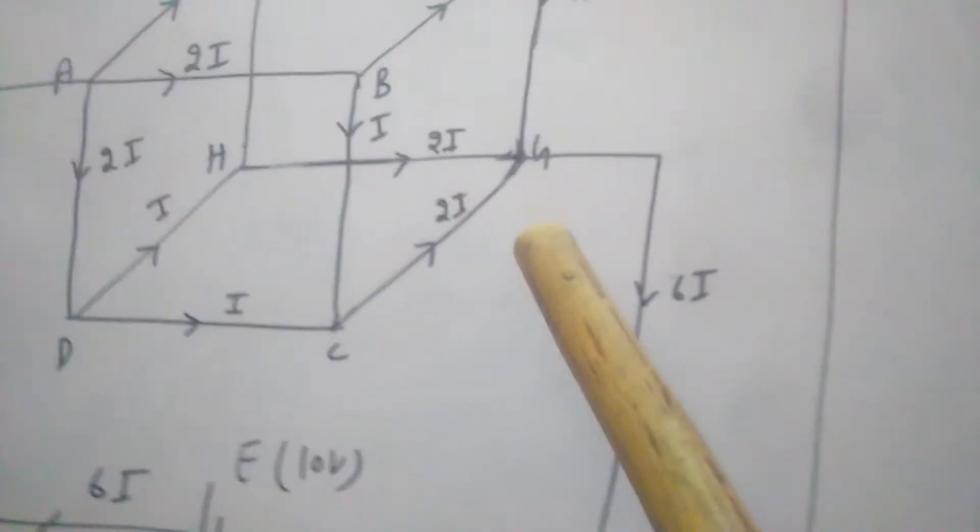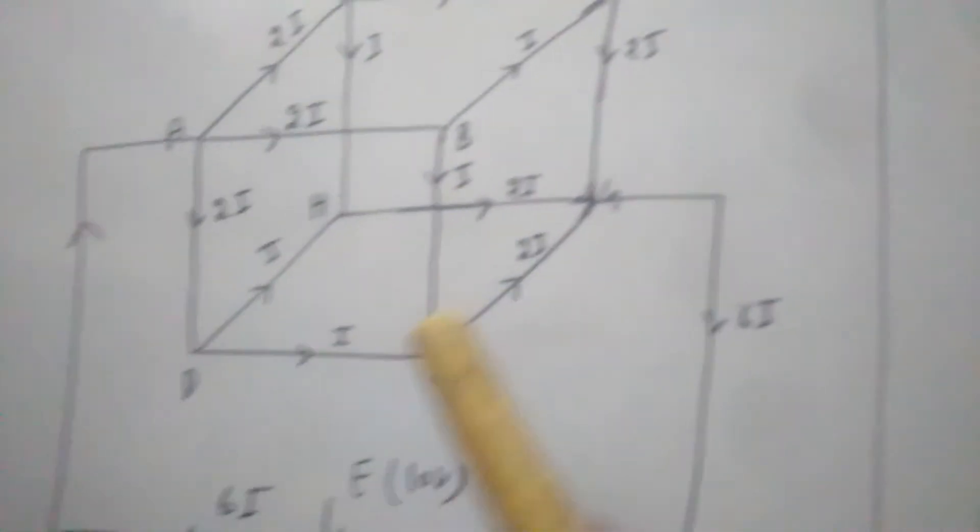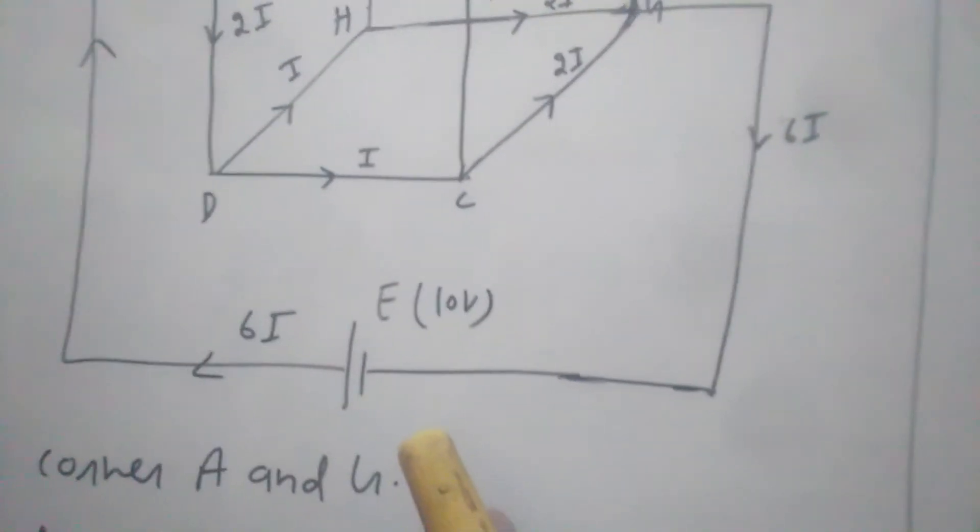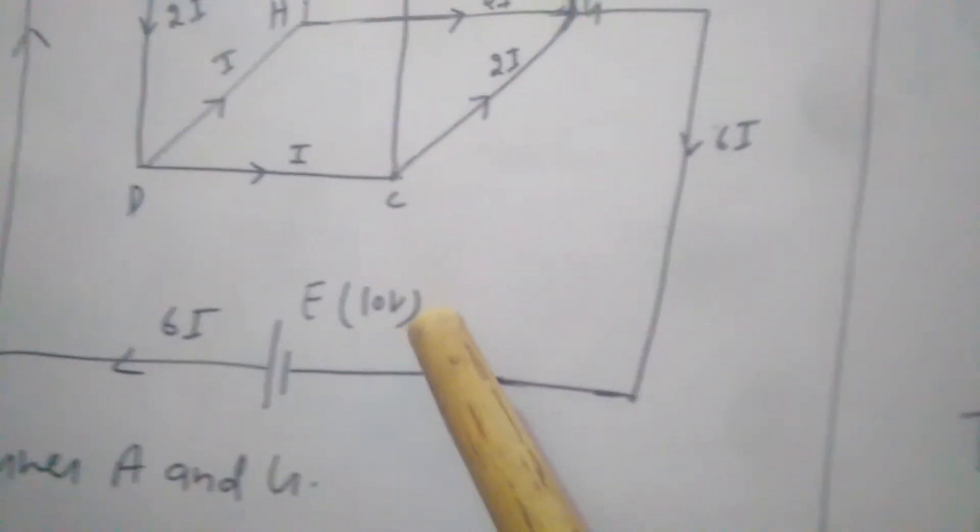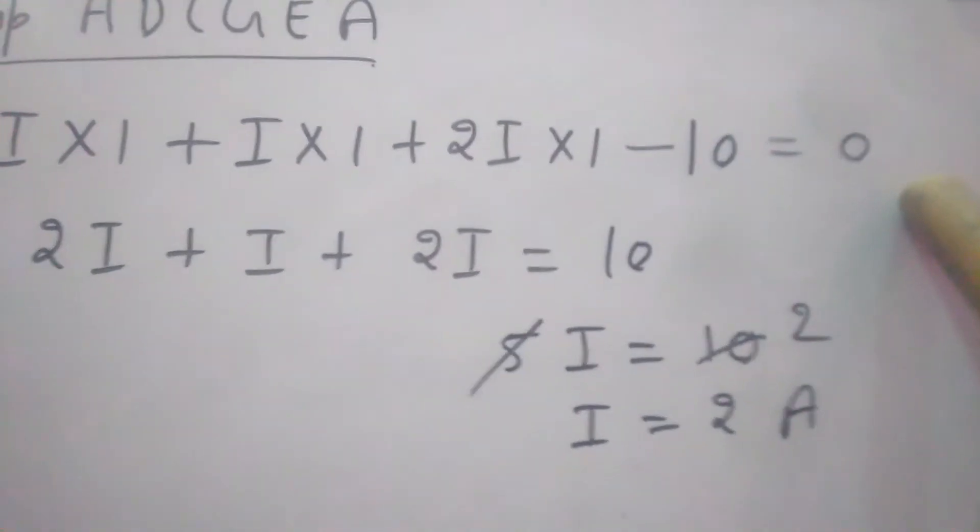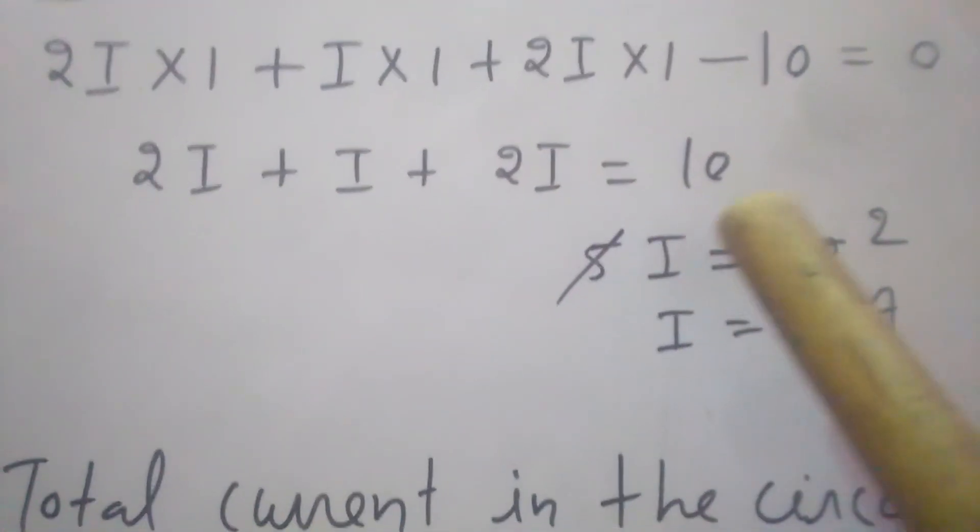Next further moving, 2i current is flowing and resistance is 1, so plus 2i into 1. Then moving ahead this way, the cell's negative terminal is encountered first, so the EMF will be negative, therefore minus 10 equals 0. Solving this: 2i plus i plus 2i equals 10, 5i equals 10, i equals 2 ampere. So we get the value of i.